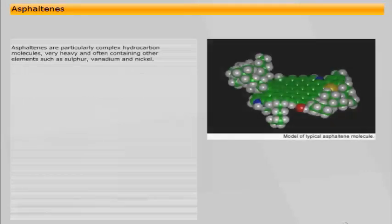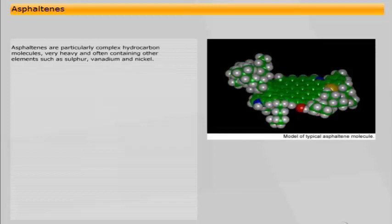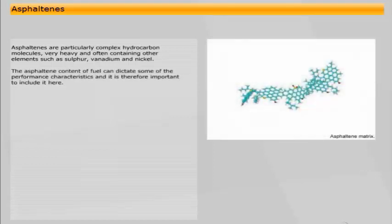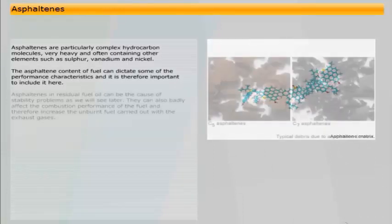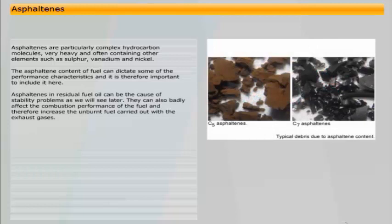Asphaltenes are particularly complex hydrocarbon molecules, very heavy and often containing other elements such as sulfur, vanadium and nickel. The asphaltene content of fuel can dictate some of the performance characteristics. Asphaltenes in residual fuel oil can be the cause of stability problems and can also badly affect the combustion performance of the fuel, therefore increasing the unburned fuel carried out with the exhaust gases.